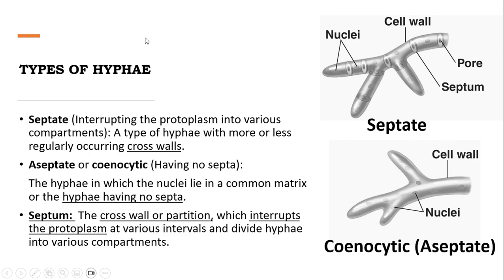There are mainly two types of hyphae: number one is septate hyphae and number two is aseptate hyphae. In septate hyphae you can see cross walls between the compartments, and the protoplast is interrupted by these compartments. Septate hyphae have more or less regularly occurring septa, or cross walls.